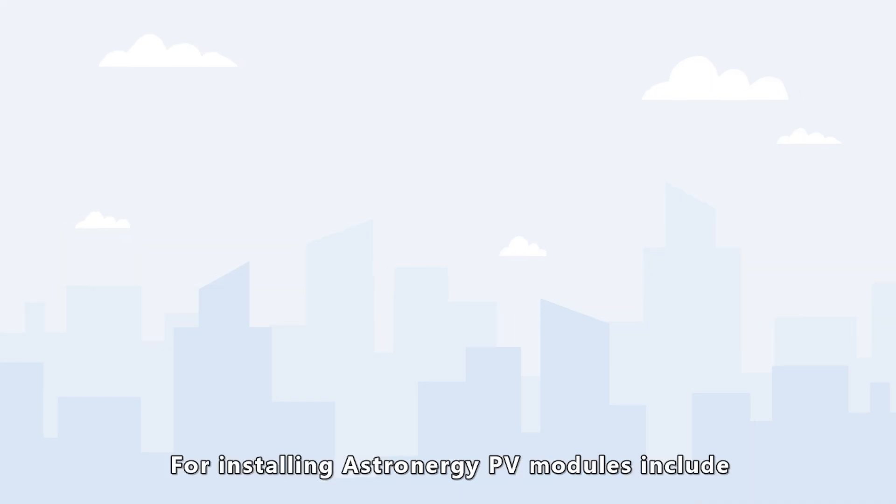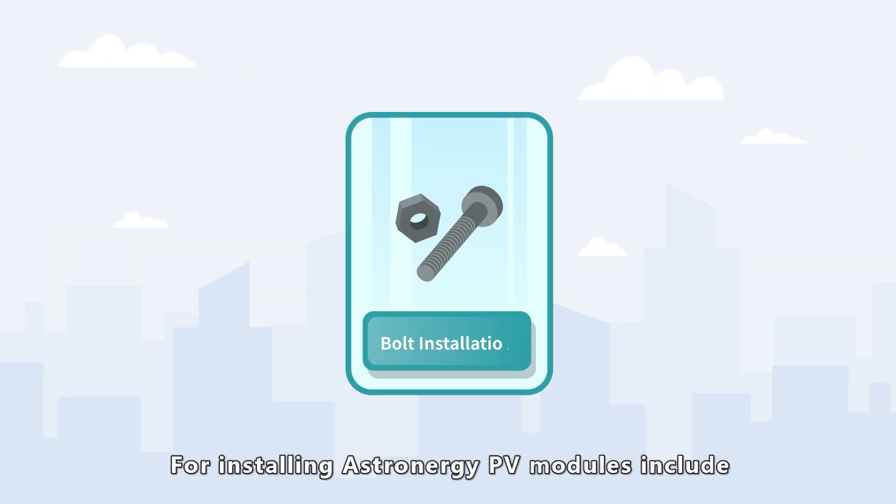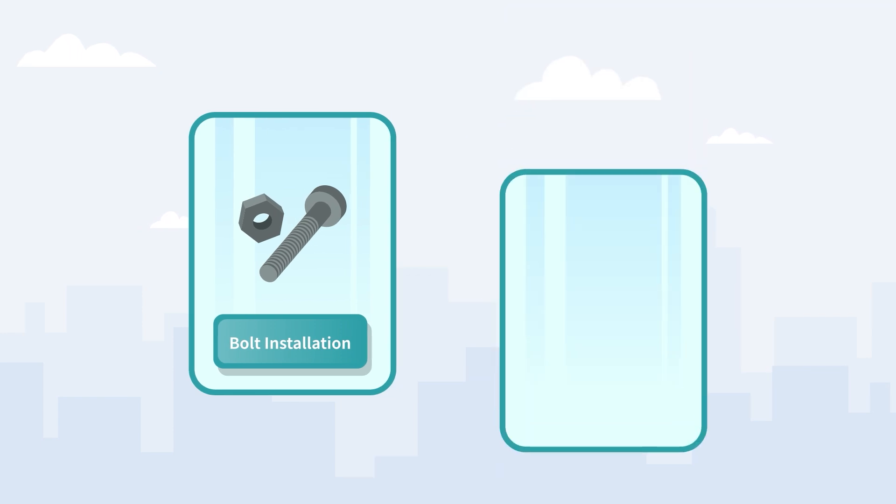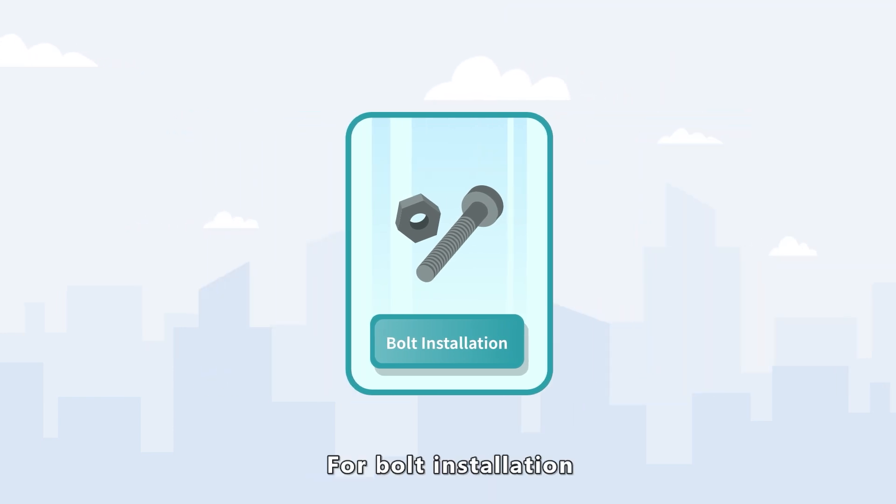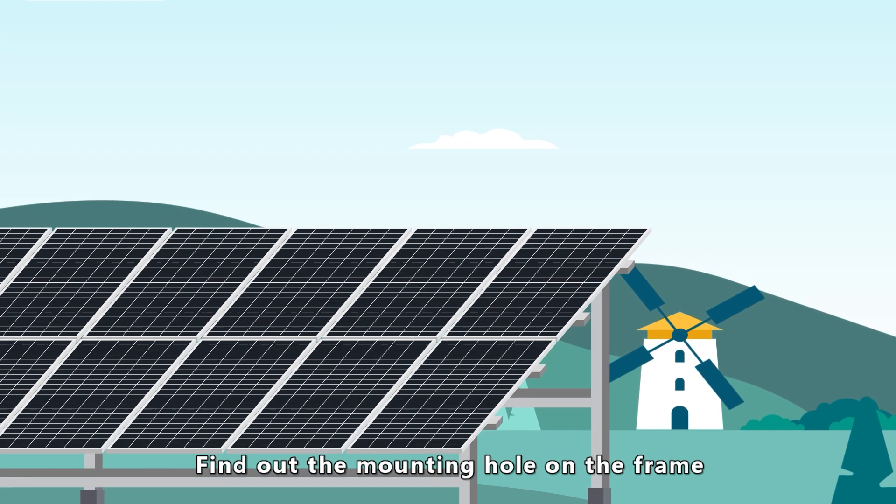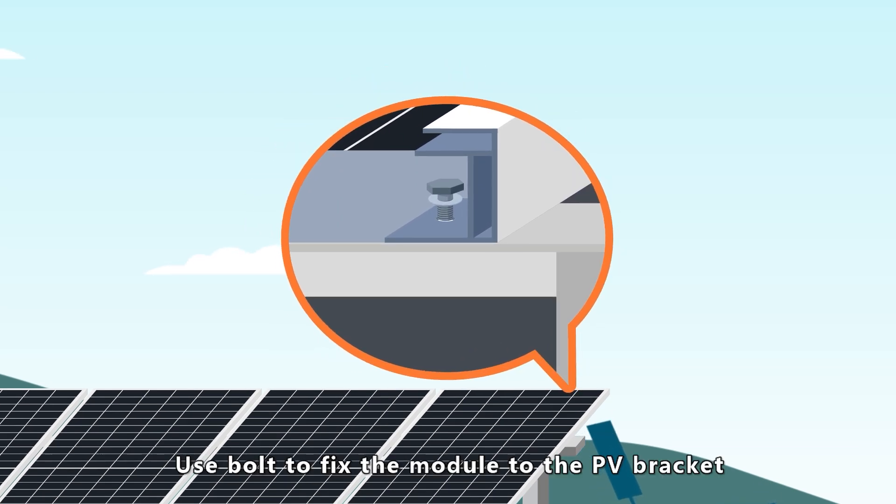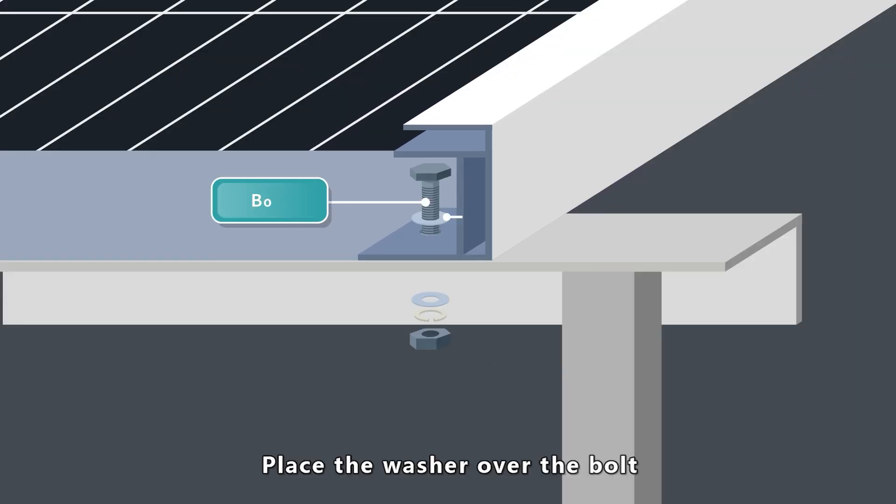Common methods for installing Asternogy PV modules include bolt installation and clamp installation. For bolt installation, find out the mounting hole on the frame. Use the bolt to fix the module to the PV bracket. Place the washer over the bolt.